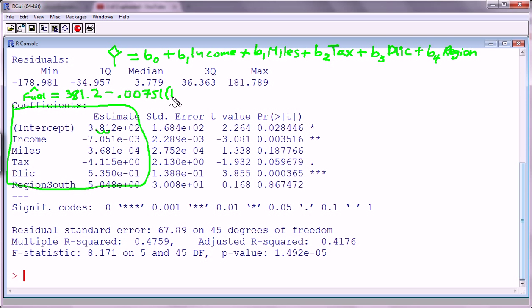so I could change this to minus 0.00751 times income. So let me put income in parentheses. Plus, what's B2? I messed this up. This was B2, B3, B4, and B5.